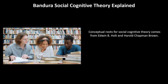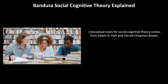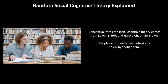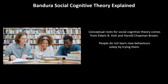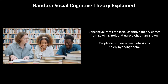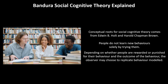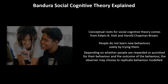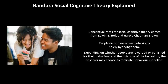Observing a model can also prompt the viewer to engage in behavior they already learned. In other words, people do not learn new behaviors solely by trying them and either succeeding or failing, but rather the survival of humanity is dependent upon the replication of the actions of others. Depending on whether people are rewarded or punished for their behavior and the outcome, the observer may choose to replicate the behavior modeled.